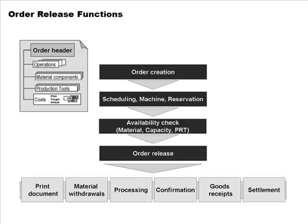Once you confirm that everything is available, you can release the order. Prior to that there is no sense in releasing because all resources are not available. Once the order is released, you can do a host of things — with material reservation you are highlighting what materials are needed, and if you look at the stock requirements list you'll see they are reserved for this order.